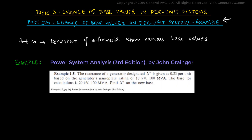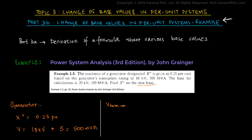This is Example 1.5 from page 30 of Power System Analysis by John Granger, 3rd edition. In this example, the reactance of the generator is given as X double prime is equal to 0.25 per unit. The rating of the generator is specified as V equals 18 kV and S equals 500 MVA. The problem asks us to find the reactance of the generator in per unit according to the new base values: V base new equals 20 kV and S base new equals 100 MVA.